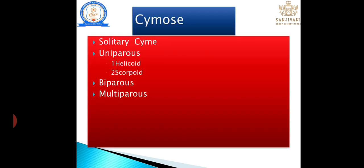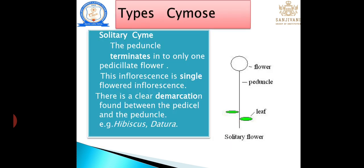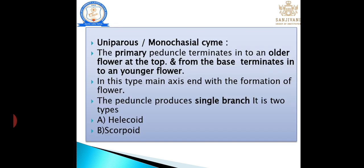Types of cymose: there are four types — solitary, uniparous, biparous, and multiparous. Solitary is also known as a single inflorescence; there is a clear demarcation between the pedicel and the peduncle. For example: Hibiscus.